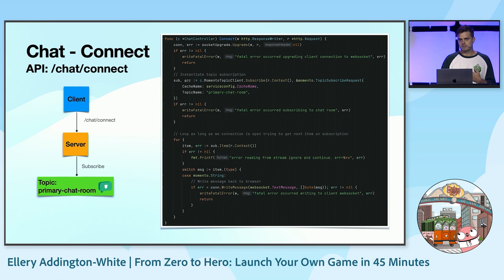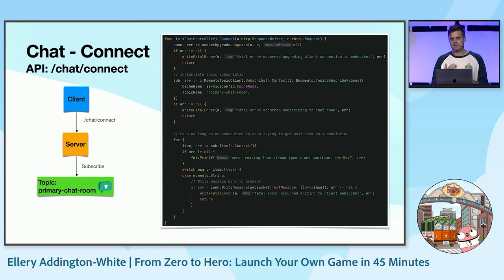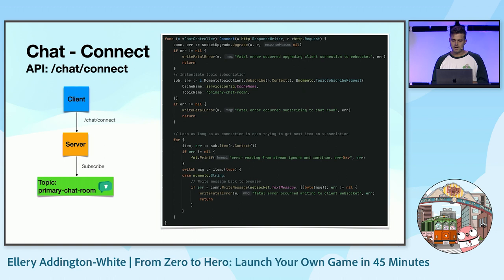This next implementation is a little more complicated — it's the chat connect API handler. Our client opens a WebSocket connection, and as long as that connection to our server is open, we continually try to read messages off that topic. Any new message that comes in on that topic, we broadcast down to our client. The first thing we do is upgrade the request to a WebSocket connection to keep it alive. Then we instantiate a topic subscription for the primary chat room, and as long as the connection's open, we keep looping and reading items off that subscription.